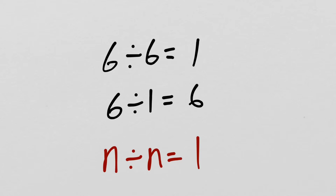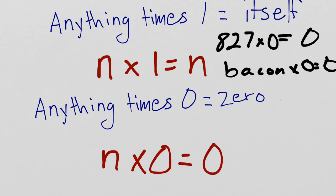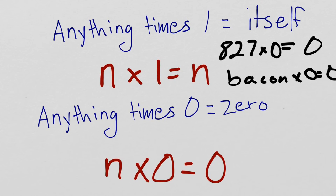That's pretty much it for zeros and ones. They're generally pretty easy as long as you remember that anything times one equals what you started with. And, anything times zero equals zero. And, as always, if you have questions, feel free to ask.